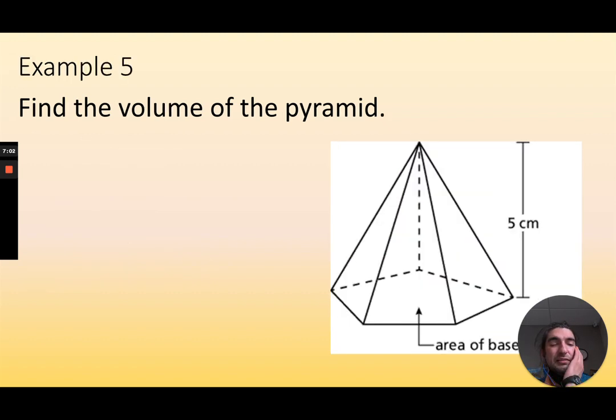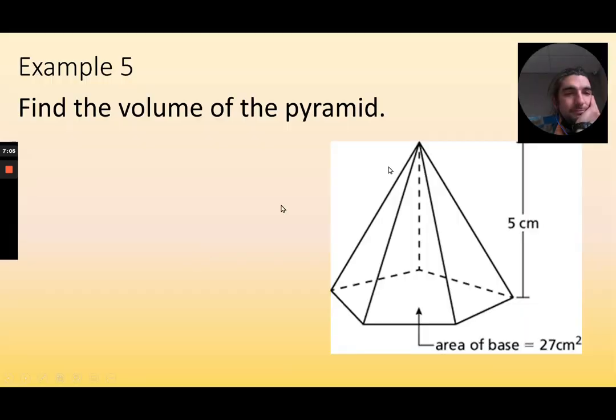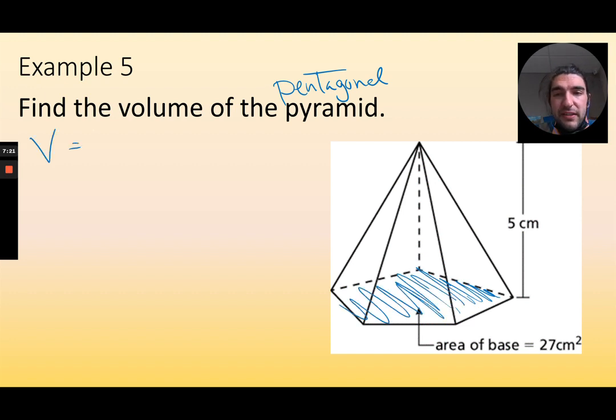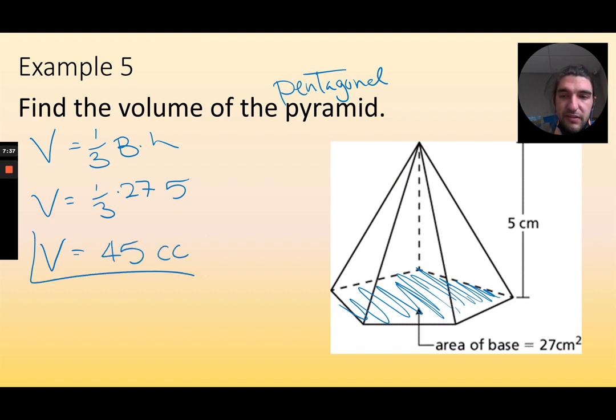Excellent. What about this kind of weird looking pyramid here. This is actually a pentagonal pyramid. Because what's different? The base is not a square anymore. It's a pentagon. It's got 5 sides. Well, thankfully I can still use my volume as 1/3 base times height. Do I know the height? Yep. It's 5. Do I know the base? It's actually given to me. It's 27 here. So I'll just type that all into a calculator, and I get 45 cubic centimeters.